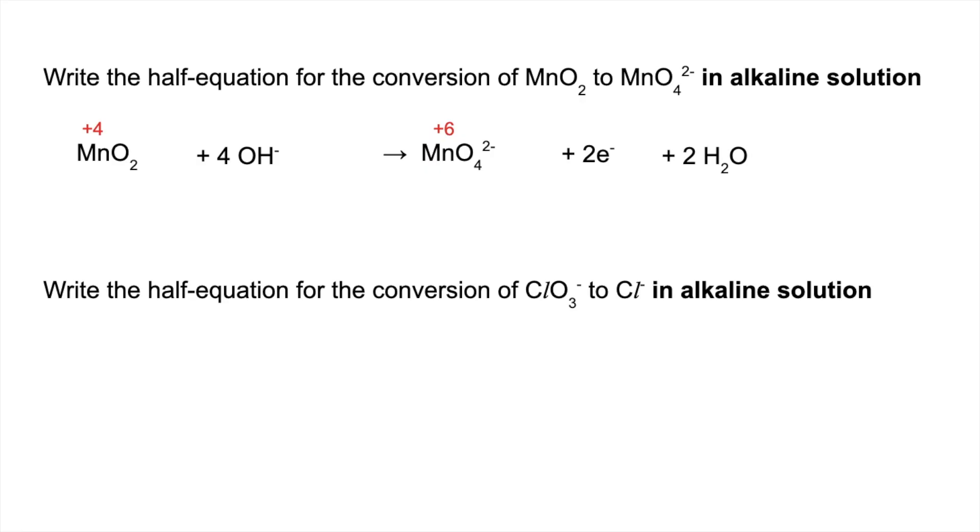And then the last one here. So we're going from +5 to -1. So that's a change of 6. So this one here is a reduction equation because our oxidation is going down. So the electrons go on the left now.